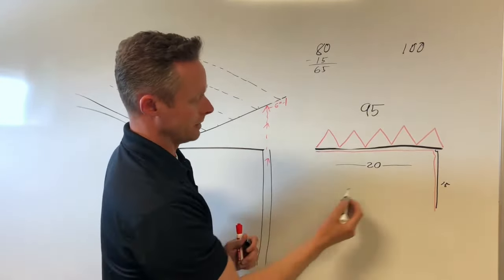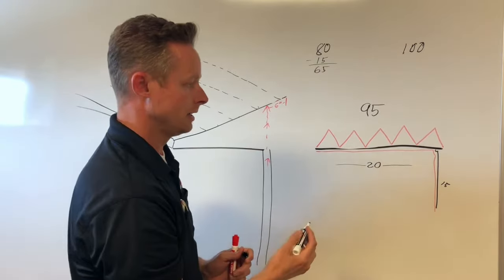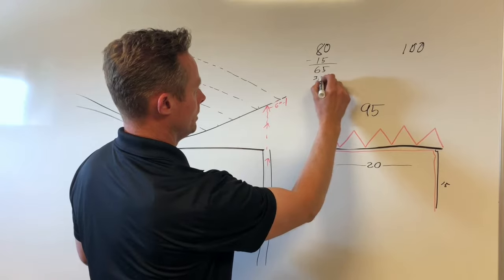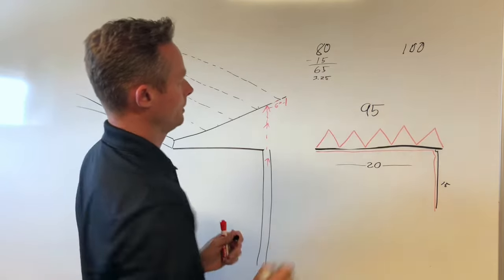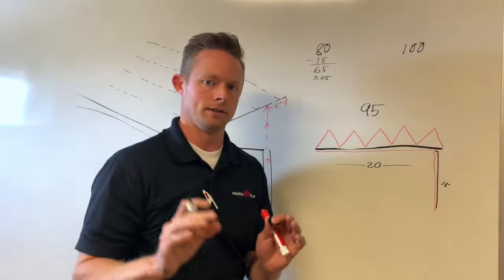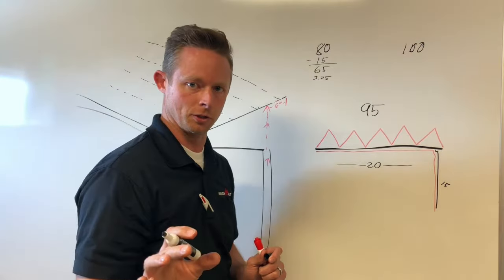Take your 65 and divide that by 20 and you end up getting 3.25. That 3.25 is a very important factor. I'll explain what to do with that in a minute.